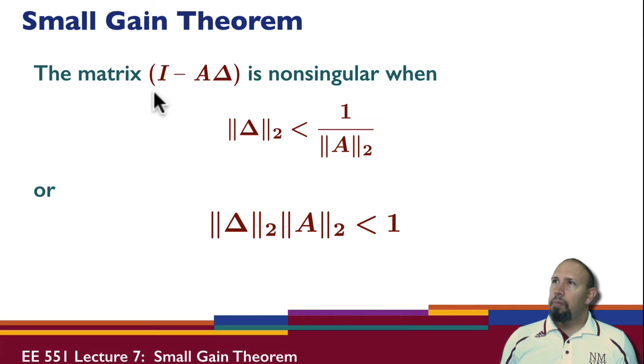We can also show that the matrix, this, so another way of looking at this is this matrix, I minus A delta, is non-singular. That is, it has non-zero determinant whenever this relationship holds. Or this relationship holds. So if the product of the two norms of the two matrices is less than one, then this matrix will be non-singular.